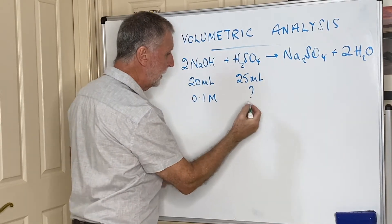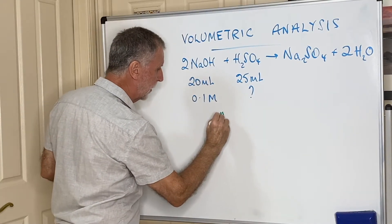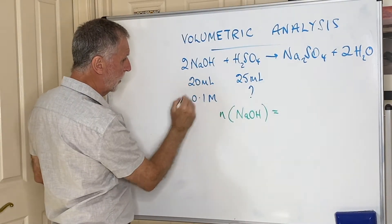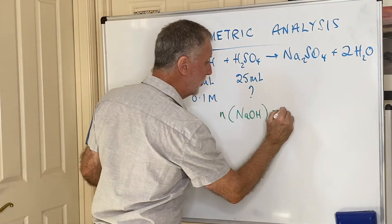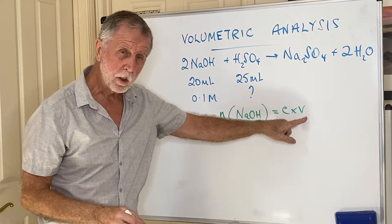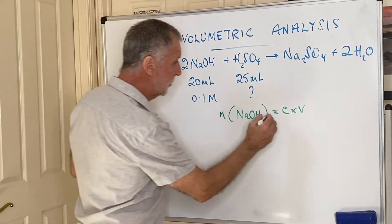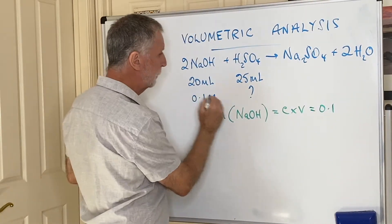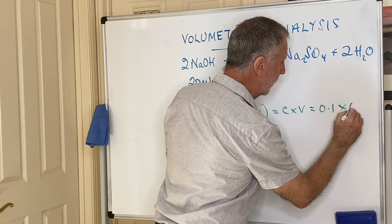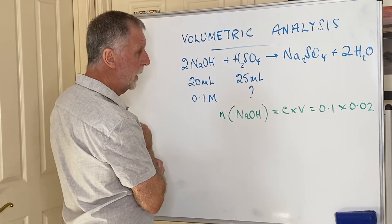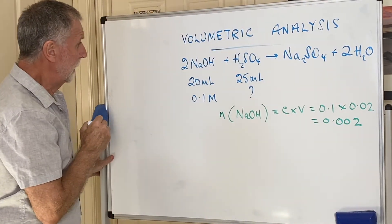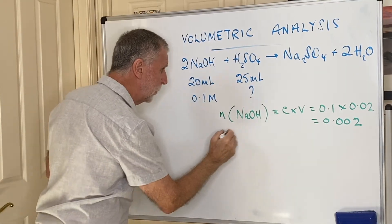Work out the number of moles of the given substance — the one for which you know all the information. Volume is 20 mL, concentration is 0.1 mol/L. Number of moles equals concentration times volume, but the volume must be in liters. So concentration is 0.1, and volume is 20 ÷ 1000 = 0.02 L. That gives 0.002 moles.